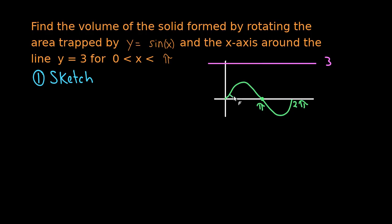With that sketch we have this area here — the area between 0 and pi — that we're interested in. That's what's trapped by sine x and the x-axis. We're going to take that and rotate it around this line y equals 3. When we do that, we're going to have some gap between the axis of rotation and that area, so that's going to form a hole in our solid.